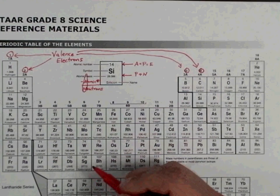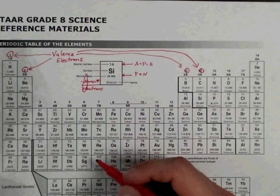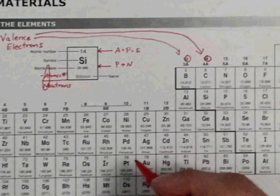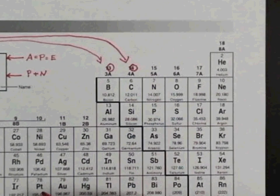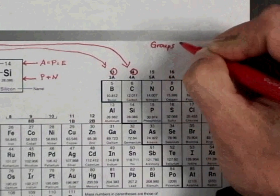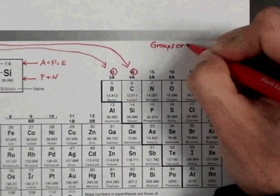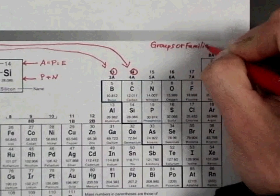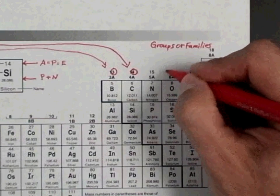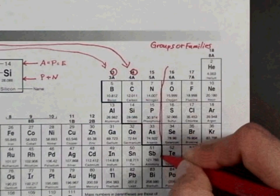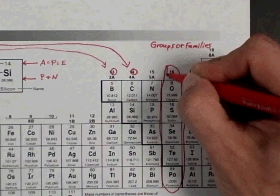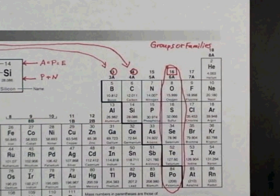All right, now we're going to move up to talking about groups or families a little bit more. So above about group 16, we're going to write that these are called groups or families, and then I'm going to circle this particular group or family. What this means is that everything in this group or family has similar properties and similar reactivity. I'm going to also put a box around 16 to show that that's the group number.